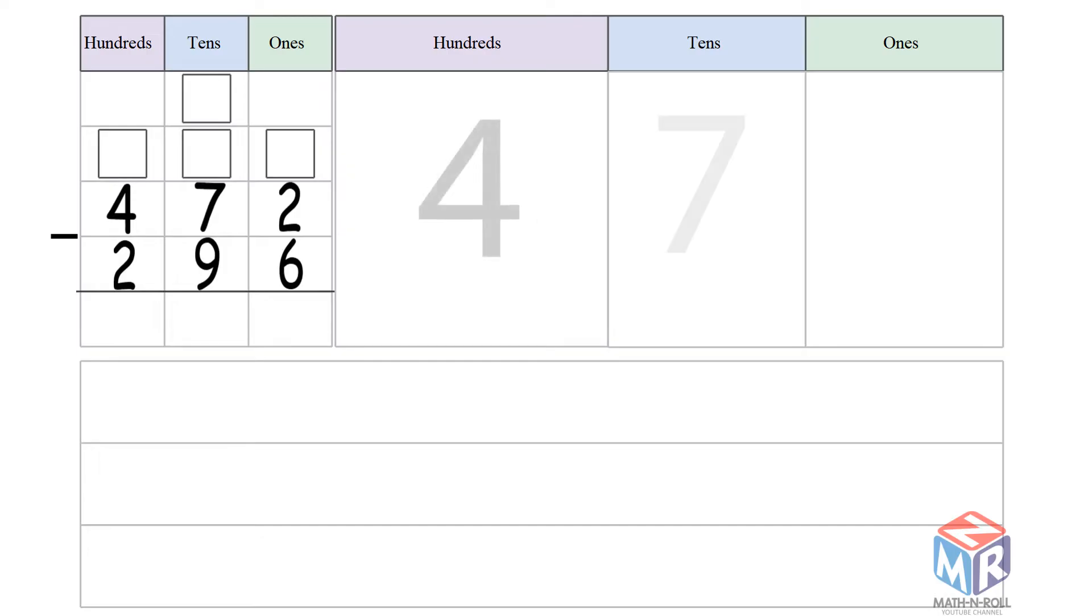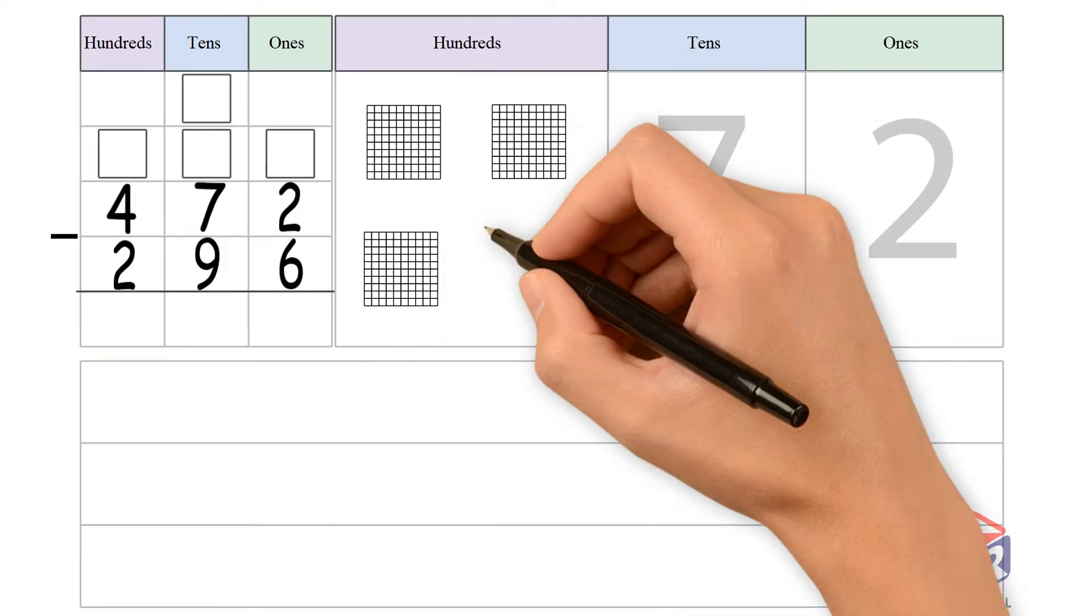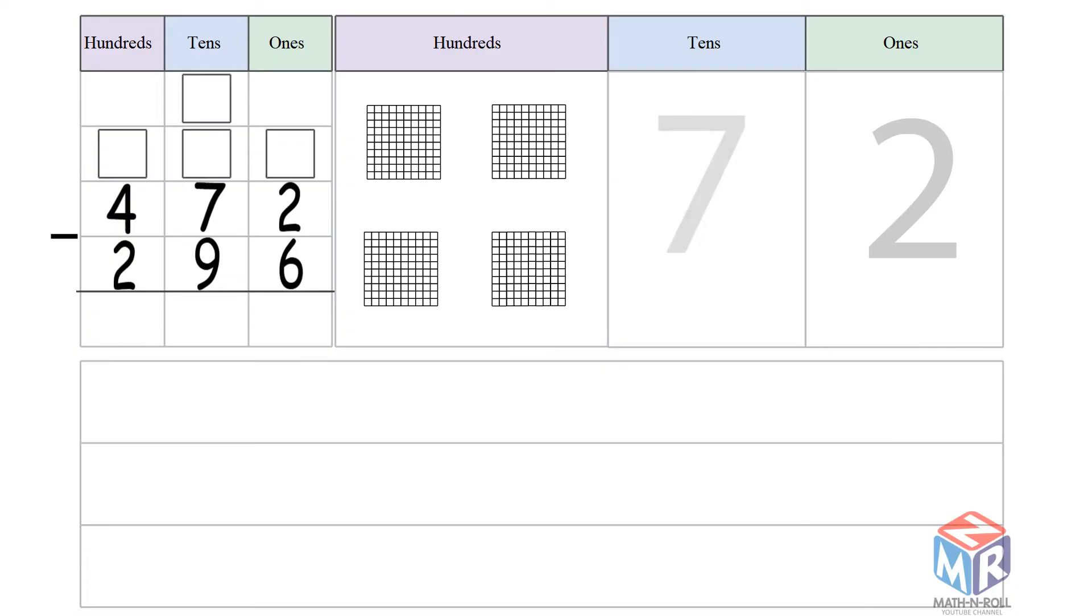472 minus 296. Let's draw it out. 472 has 4 hundreds, 7 tens, and 2 ones.